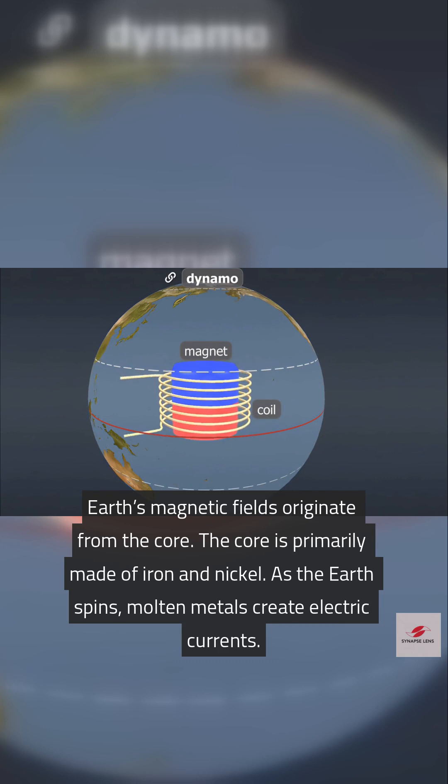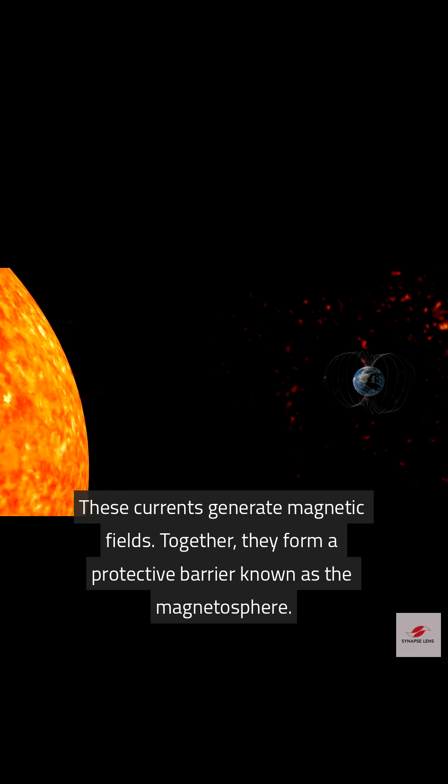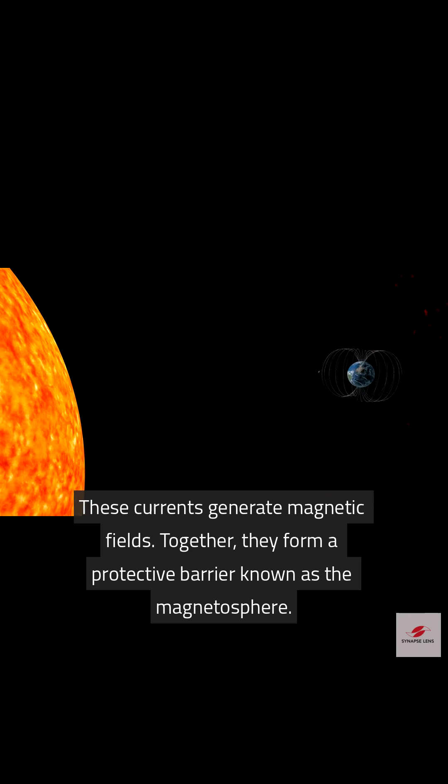As the Earth spins, molten metals create electric currents. These currents generate magnetic fields. Together, they form a protective barrier known as the magnetosphere.